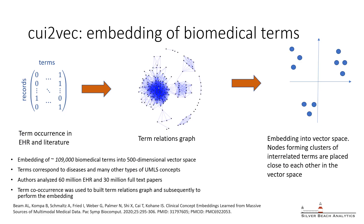In this work, we are investigating properties of recently developed embeddings of medical terms available in the CUI-2VEC resource, and determined whether they allow inferring functionally meaningful disease clusters and whether they can be used in prediction of novel gene-disease associations.